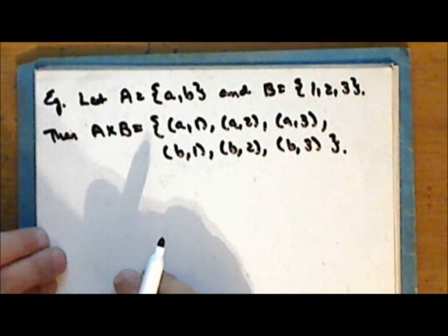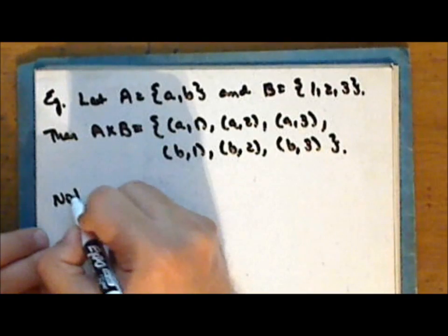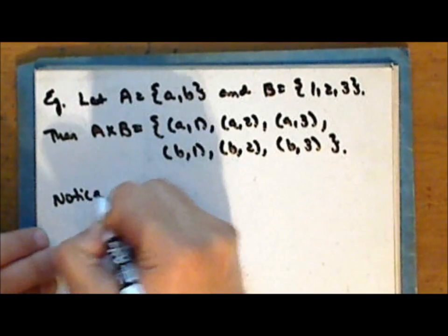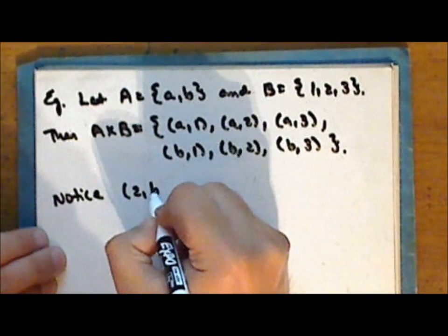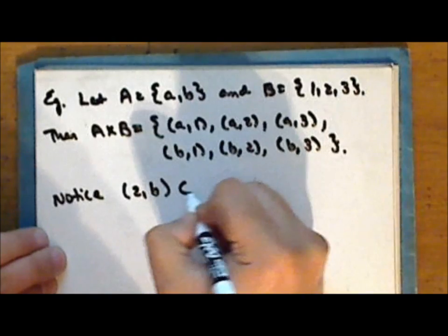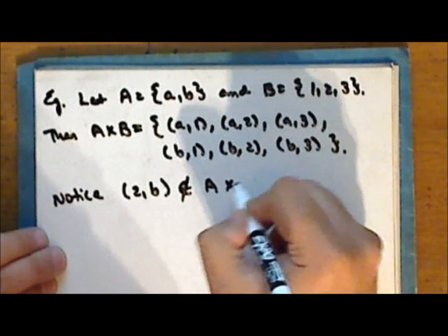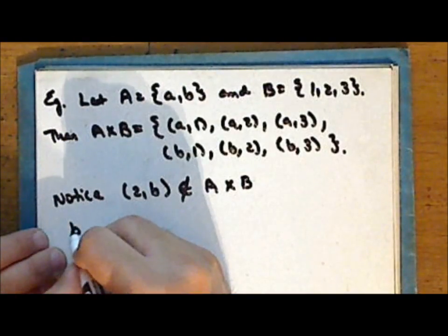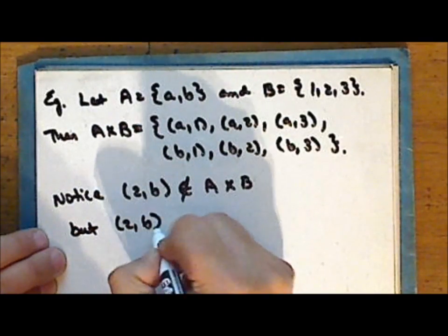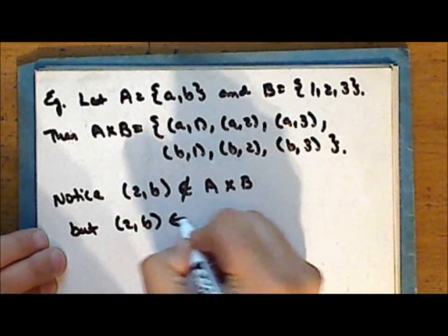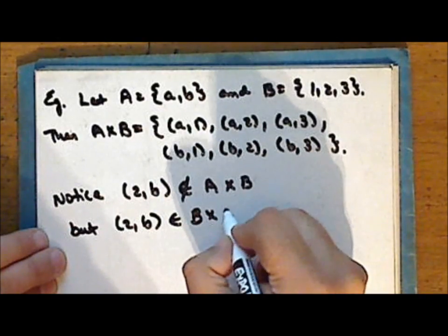Order does matter. Notice that the ordered pair (2, b) is not in the Cartesian product A × B, but the same ordered pair (2, b) is in the Cartesian product B × A.